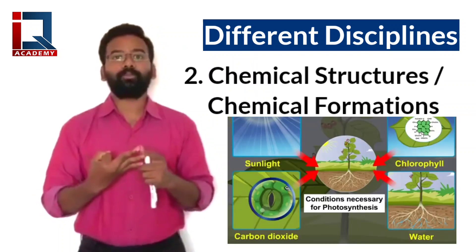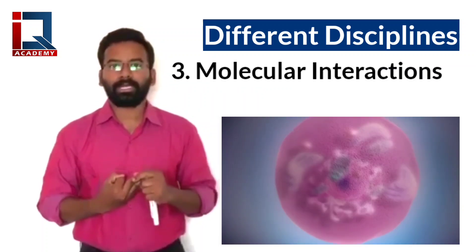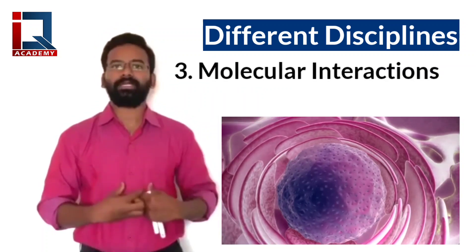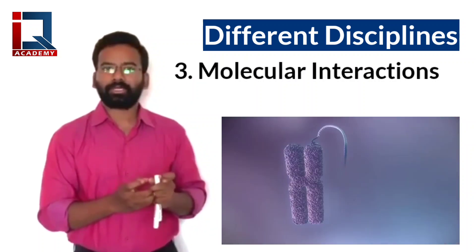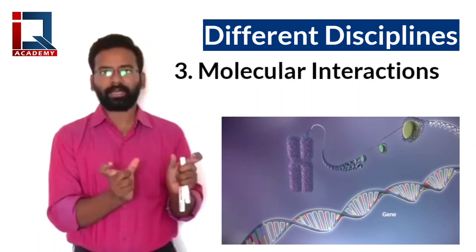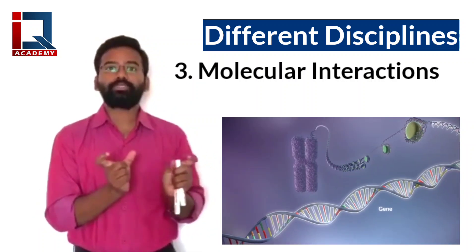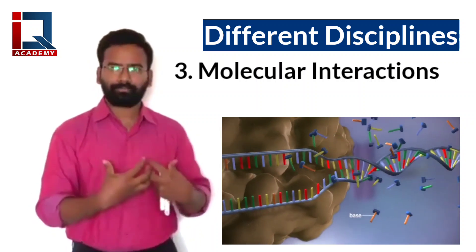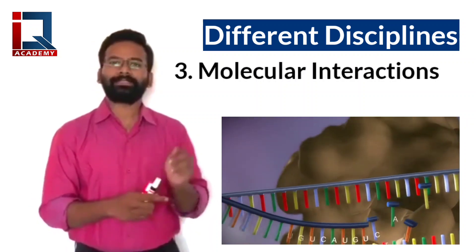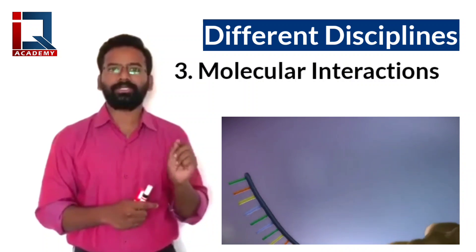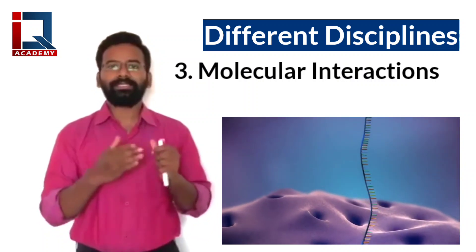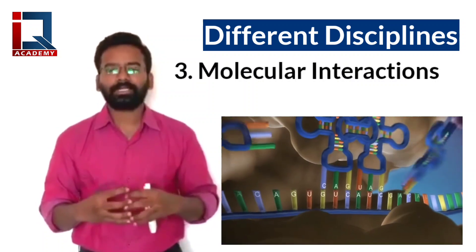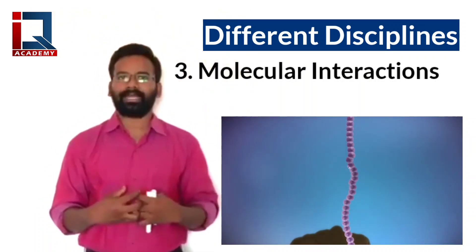The third very important concept is molecular interactions. When I am talking about molecular interactions, I am precisely talking about DNA and RNA. These two are the basic structures of life. When a human body is formed, it is formed by a single structure called DNA. When this DNA and RNA interact with each other, that is called molecular interactions.